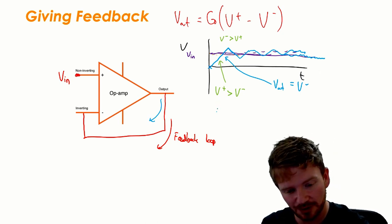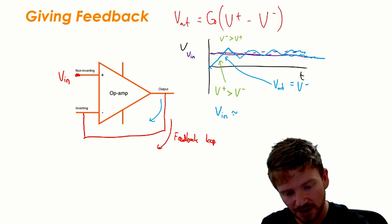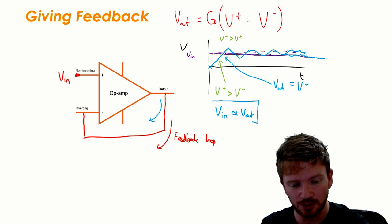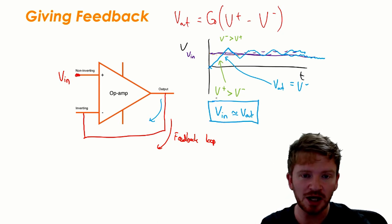So under these circumstances what happens is V in is going to be approximately the same as V out. Obviously with a real op amp it will oscillate around a little bit and it will change slightly, but they're going to be approximately equal to each other.